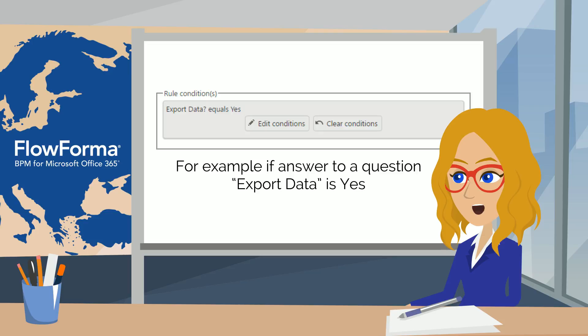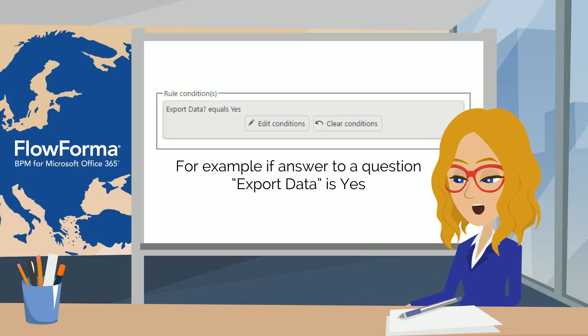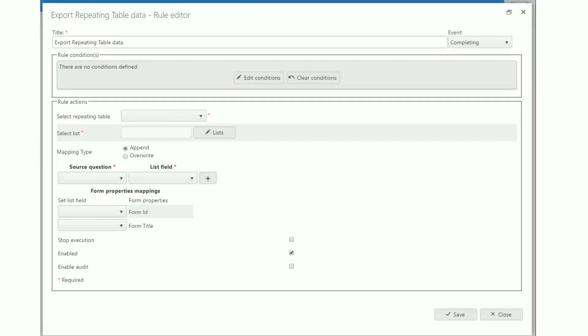The rule condition section allows you to control in more detail when the rule is executed. If you don't set any conditions, the rule will execute automatically. If you set conditions, then the rule will only execute when the conditions are met. In the rule actions section, select the repeating table that you will get data from.